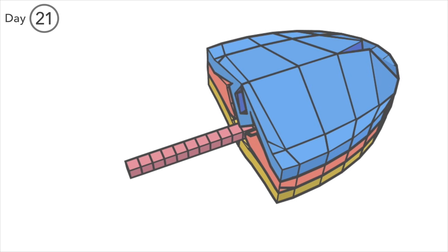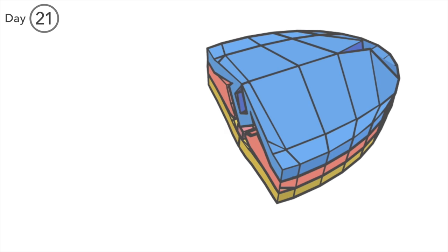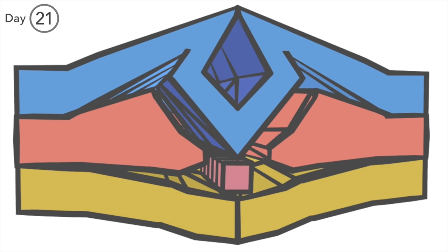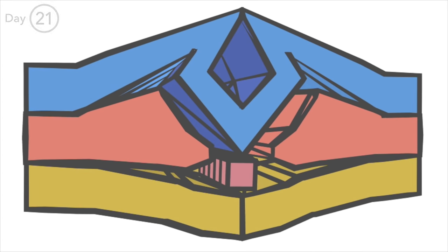The notochordal plate has by now lengthened. It's closed its inferior opening which was the neurenteric canal and it's now become a solid rod which is the notochord. Just beneath the developing neural tube lies this structural backbone of the embryo.